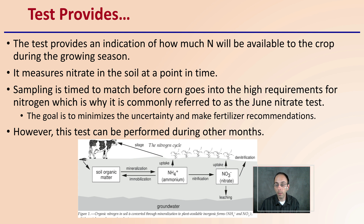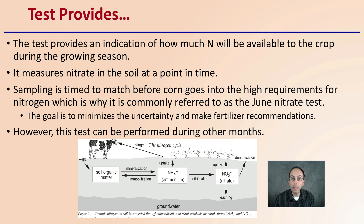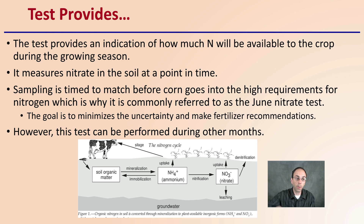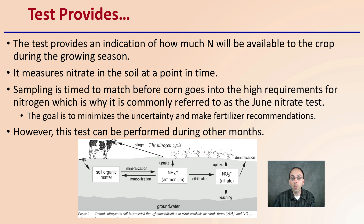The test provides an indication of how much nitrogen will be available to the crop during the growing season — a little more than just a point in time. It measures nitrate in the soil at a point in time but makes estimations going forward. Sampling is timed to match before corn goes into a higher requirement for nitrogen, which is why it's commonly referred to as the June Nitrate Test. For other crops as well, sampling in June would also be recommended.